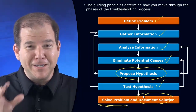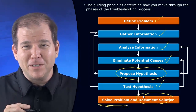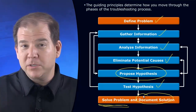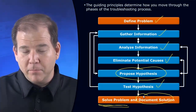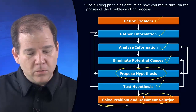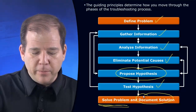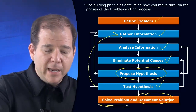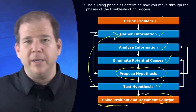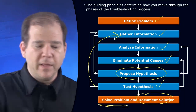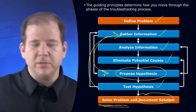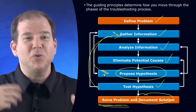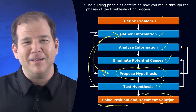Many times — a statistically significant percent of the time — our proposed solution is going to be incorrect. But not a big deal. We've got a feedback loop built in here. We'll just go back, maybe gather some additional information, then propose another hypothesis and test that. We can just try, try again as they say.